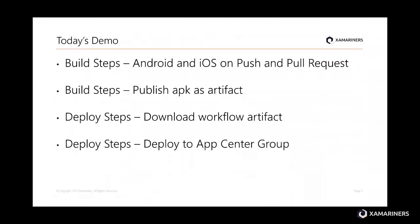Let me move on to show what we are going to do today. I already have a very basic sample mobile application with code downloaded from GitHub. I'm trying to build this application using GitHub Actions. It has three parts — iOS, Android, and Universal Windows Platform — but I will only build the Android and iOS applications. Once built, I will publish the APK as an artifact in the workflow and then download that artifact. Then we can see how to get it deployed to App Center using another action.